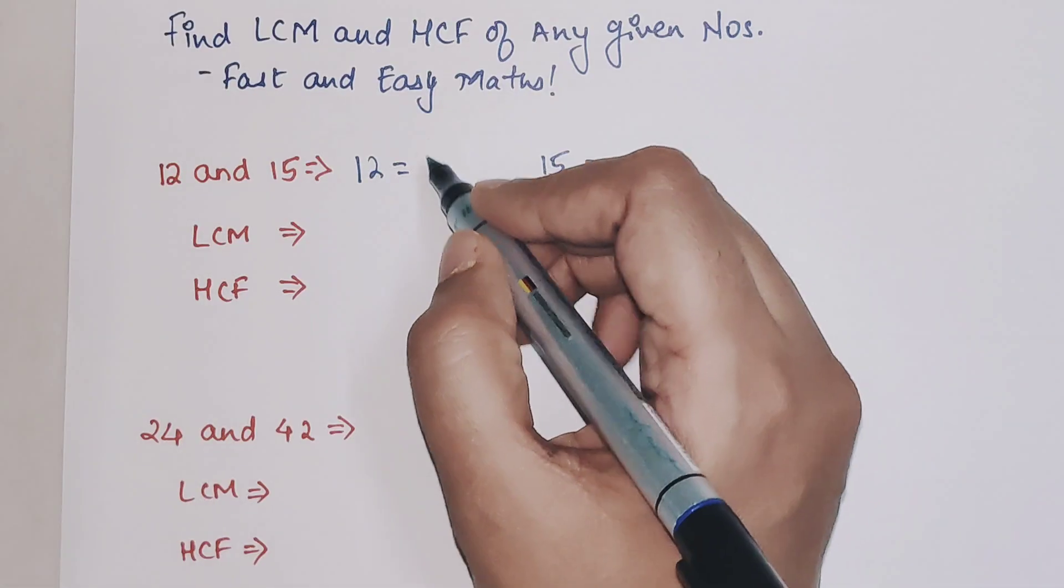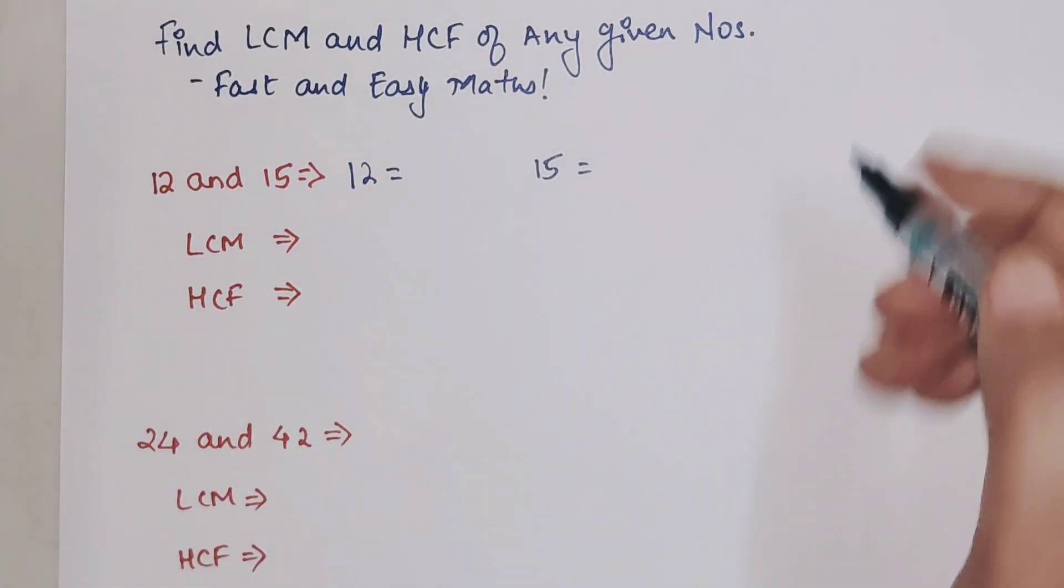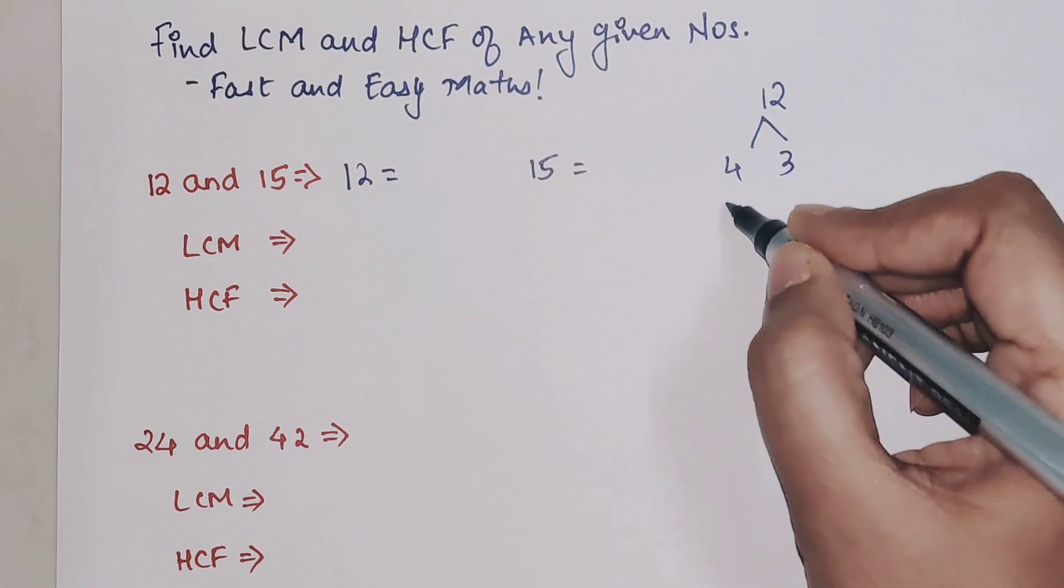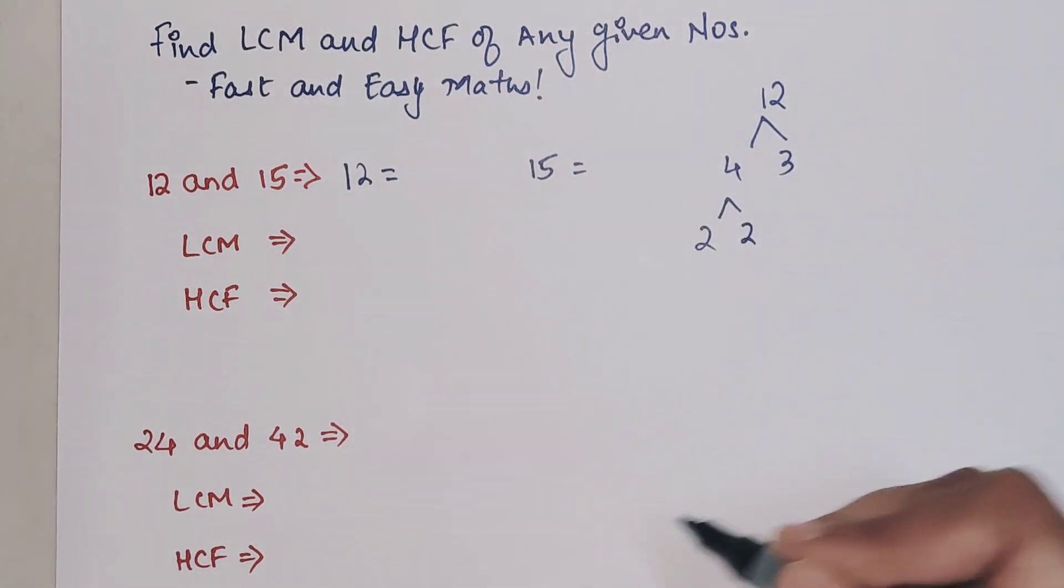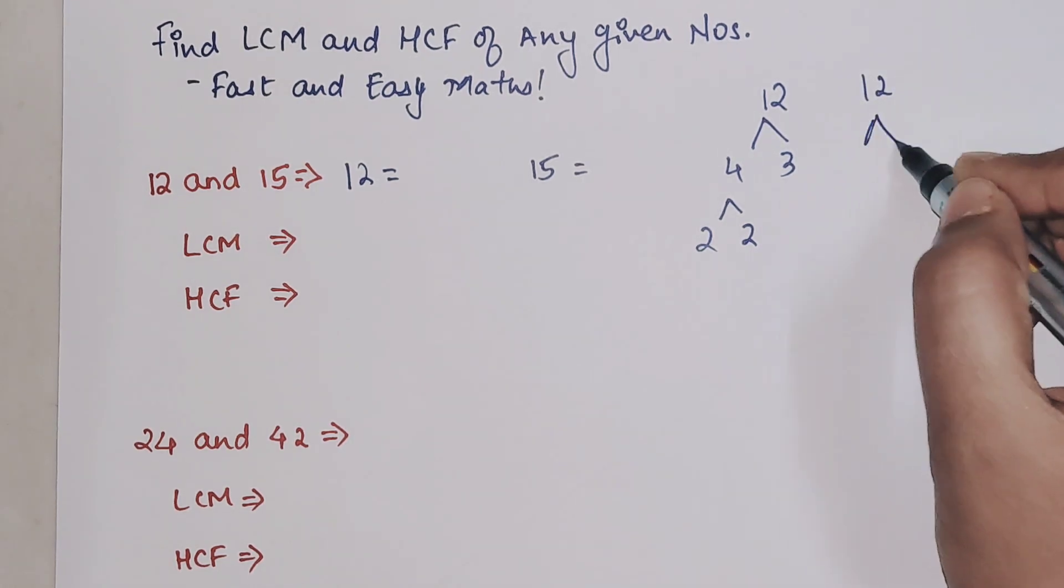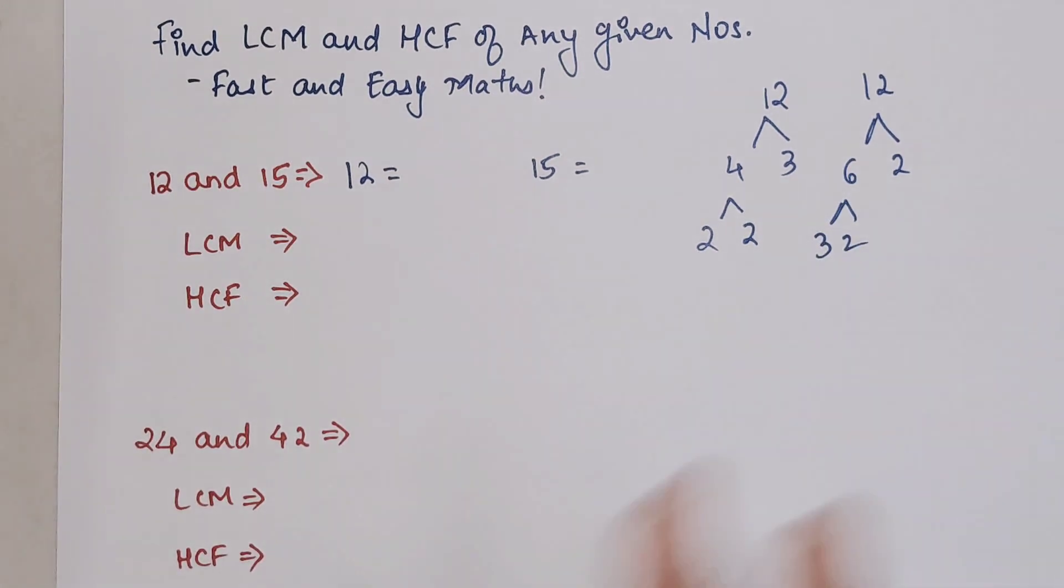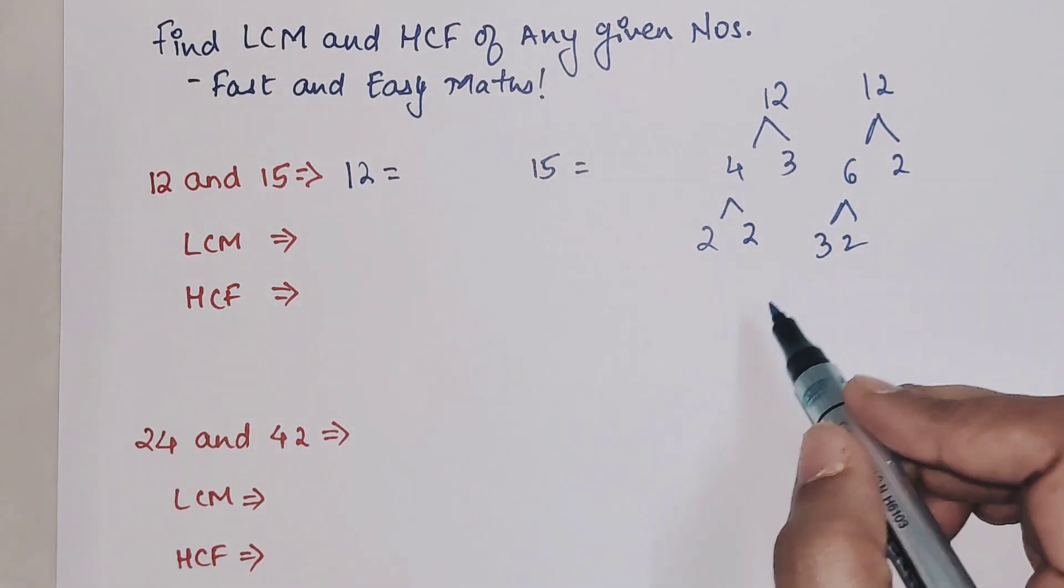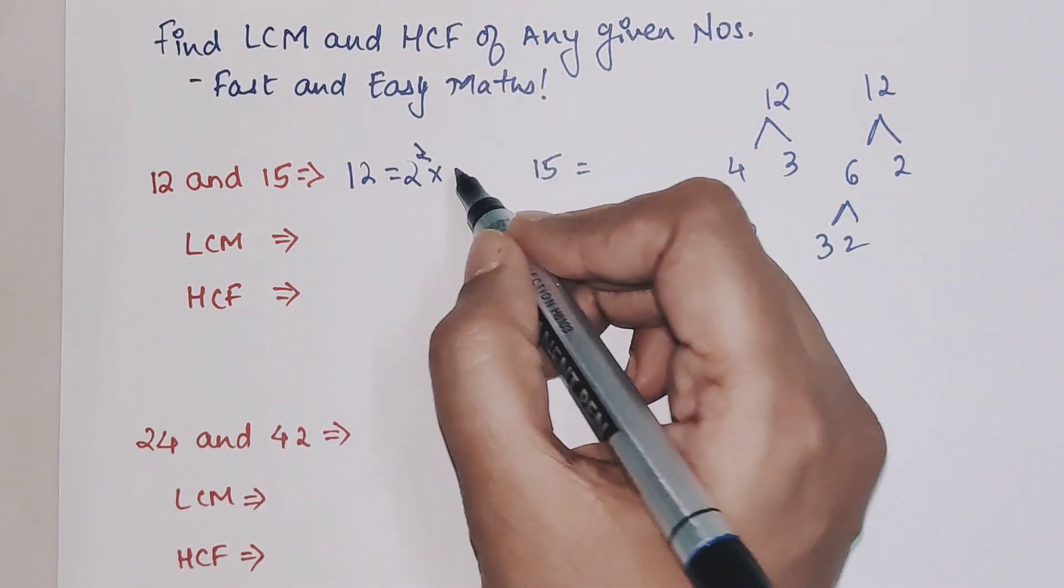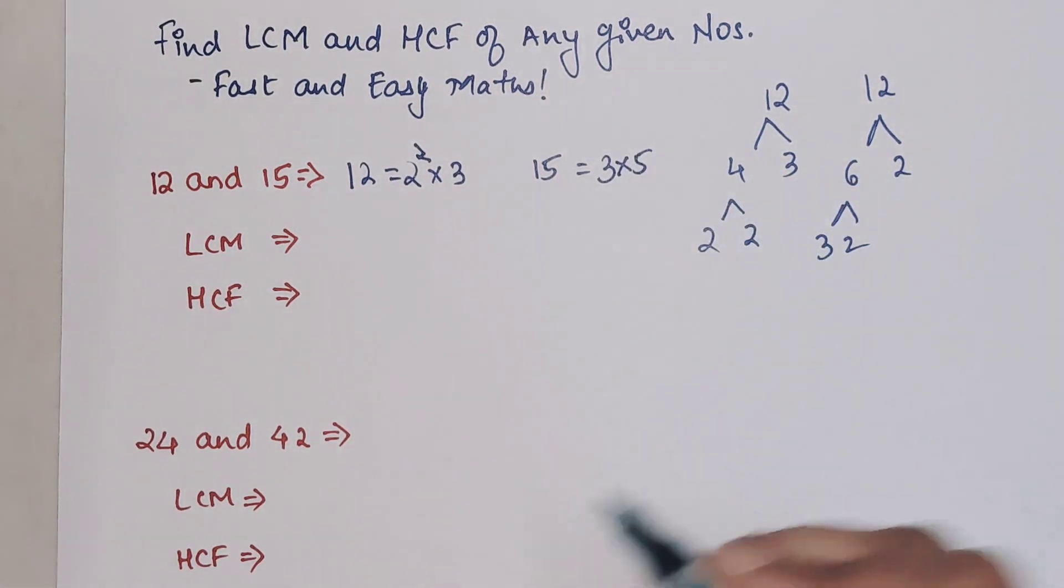We know that 12, doing prime factorization is very simple. I can do this - 12 is 4 into 3, and that gets me 2 into 2. Or you can even do 12 as 6 into 2, that gets me 3 into 2. Eventually any method you will get the same prime factors. So this is 2² into 3, and 15 would be 3 into 5.